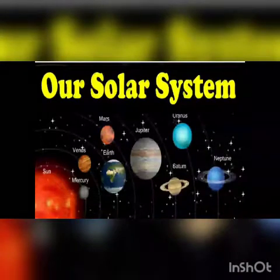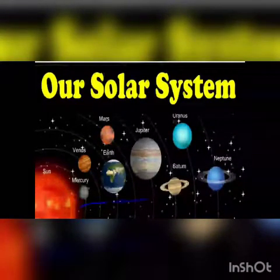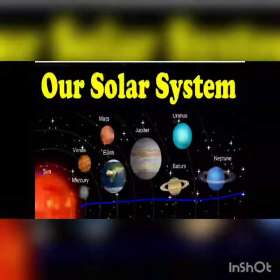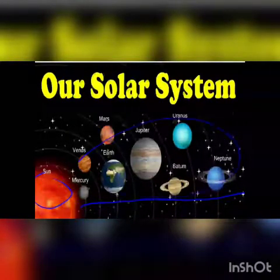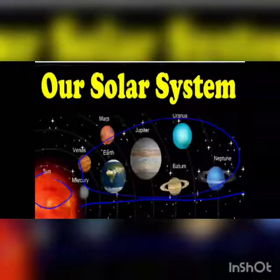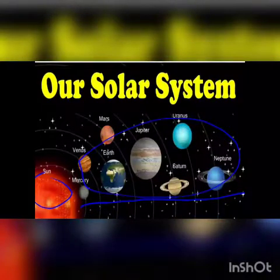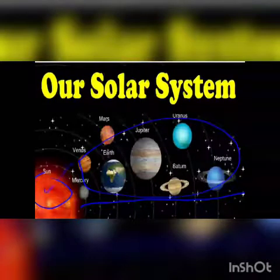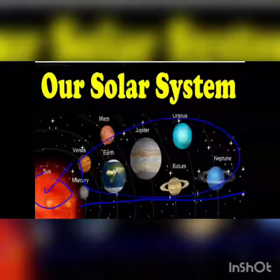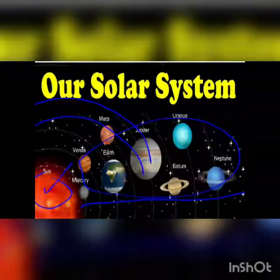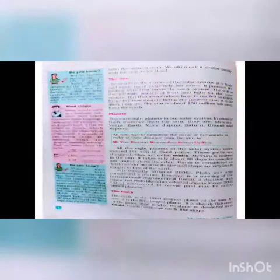The different parts of the solar system include asteroids, meteors, planets, and more. The Sun, all eight planets, satellites, and some other celestial bodies together constitute the solar system. The Sun is the head of this family, as all the planets are moving in their orbits around the Sun.